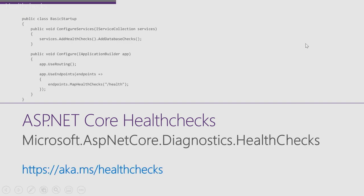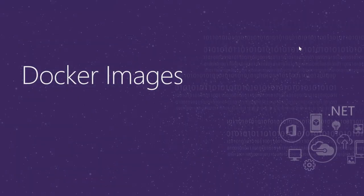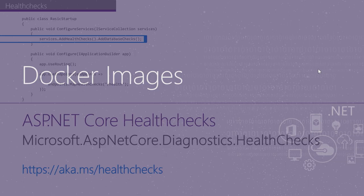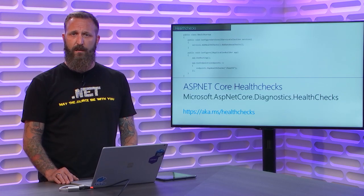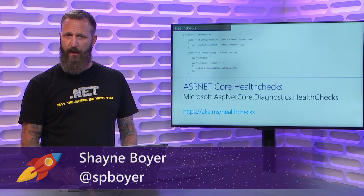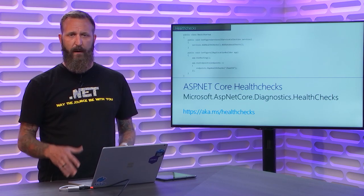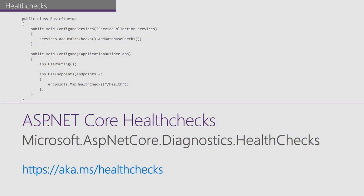We can expand on that and add database checks as well. If you want to make sure your app has database connectivity, you can set up connections to your database backends. If the service isn't connecting properly, it returns an unhealthy response. This is really helpful in microservice development when deploying to containers and doing rolling updates — you want to confirm your service starts correctly and your health endpoints are up. Just add dot AddDatabaseChecks(), also available in the diagnostics package.